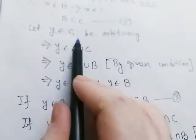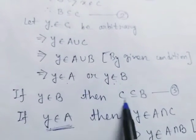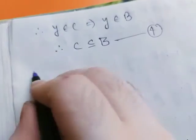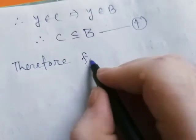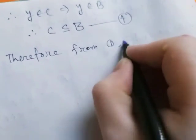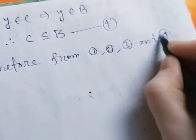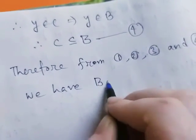So if y belongs to C we have two options: y belongs to B (case 3) giving C subset of B, or y belongs to A (case 4) also giving C subset of B. From cases 1, 2, 3, and 4, we have B equals C. Proved.